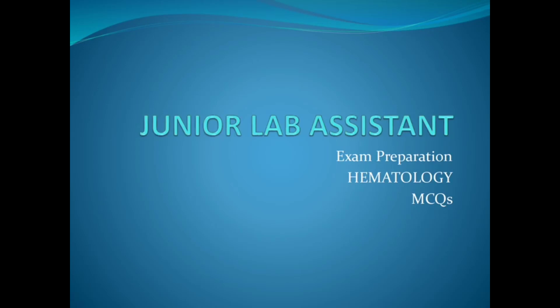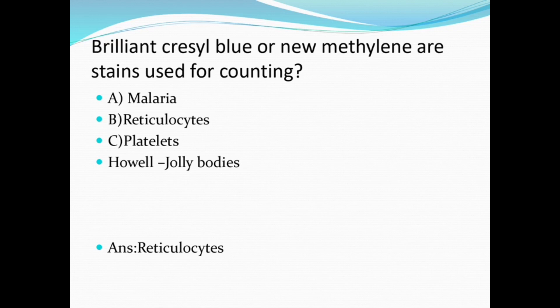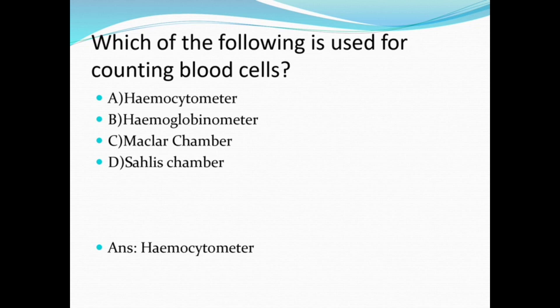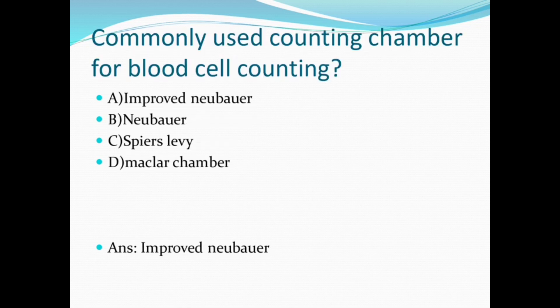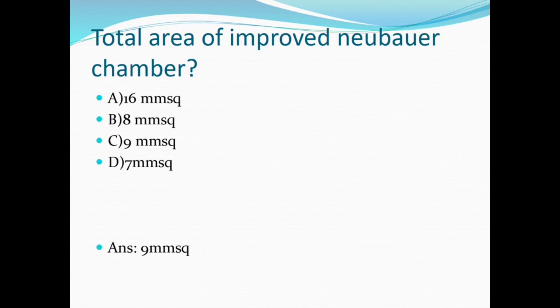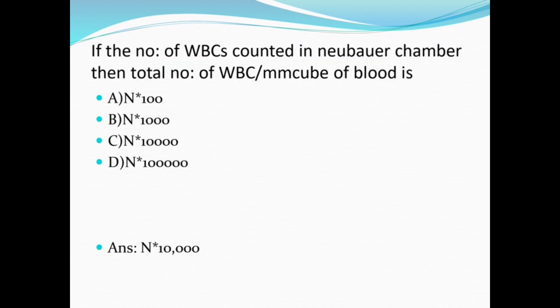Junior lab assistant exam preparation — hematology MCQs. Brilliant cresyl blue or new methylene blue stains are used for counting reticulocytes. The hemocytometer is the commonly used counting chamber for blood cell counting. The total area of the improved Neubauer chamber is nine square millimeters.